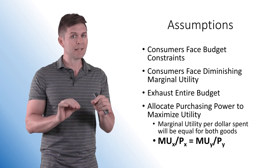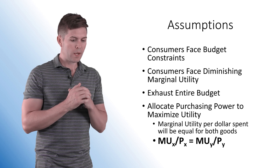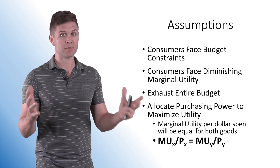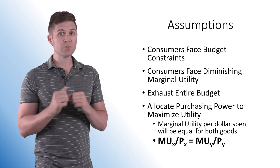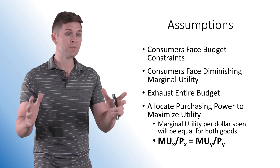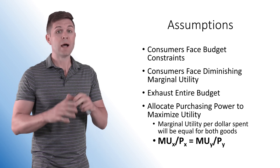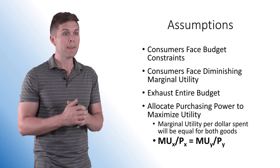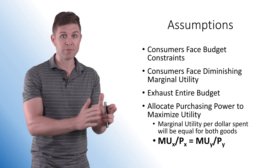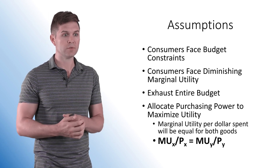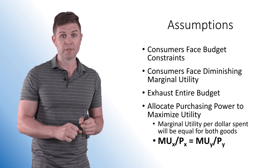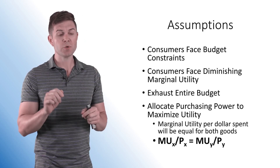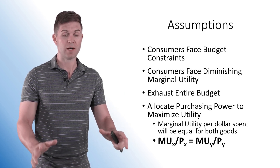Let's go to the assumptions. Basically what we're doing is trying to help somebody allocate their money to make purchases between two items to maximize their utility. Some assumptions: consumers face budget constraints — they only have so much money. Consumers face diminishing marginal utility. These consumers will exhaust their entire budget, spending every cent on two different consumer goods, and allocate purchasing power to maximize utility. This is achieved when the marginal utility per dollar spent is equal for both goods on the last purchase of each good.